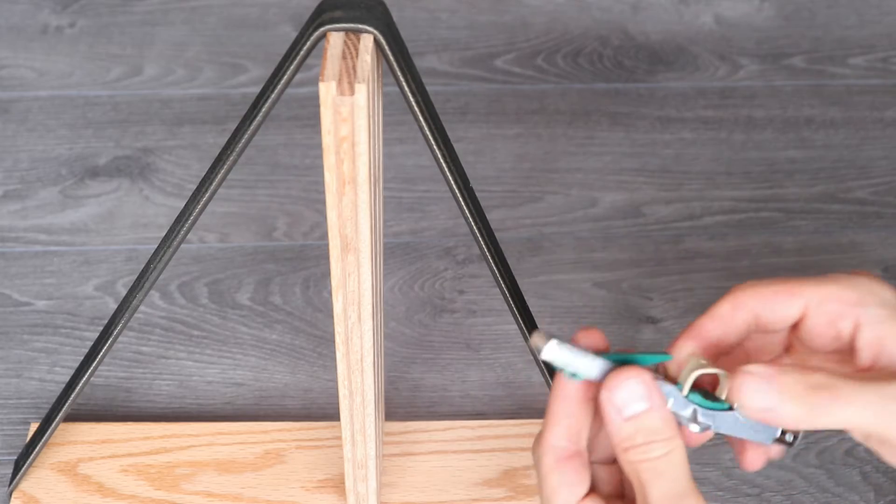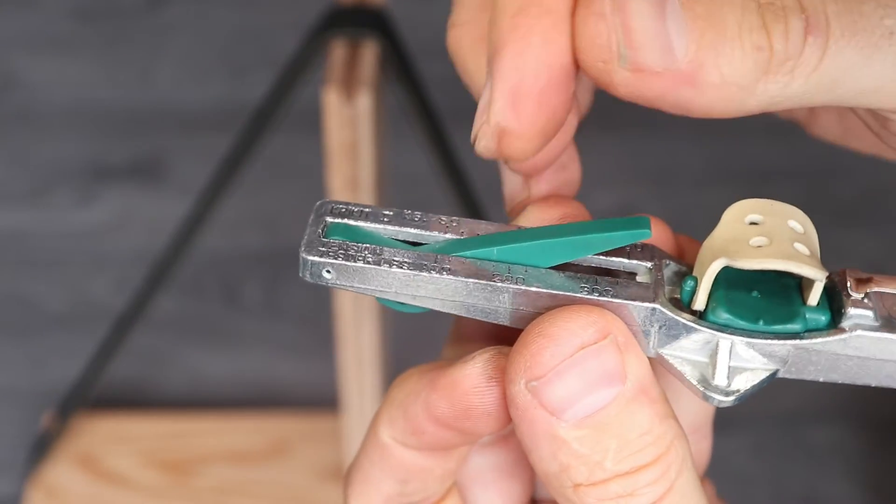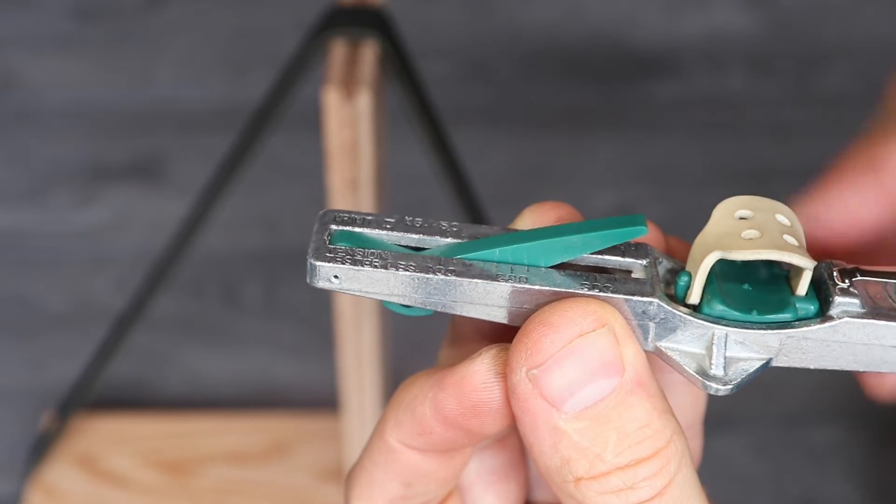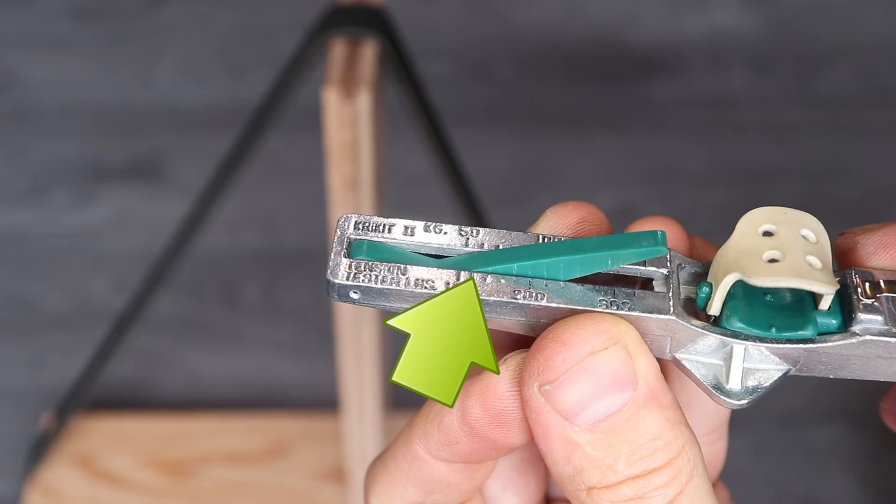Once it clicks, make sure to stop pressing, and now you can read your measurement. So the measurement is exactly where the needle is intersecting with the metal surface here. And in my case, it's the first notch after 100, which is 120 pounds.